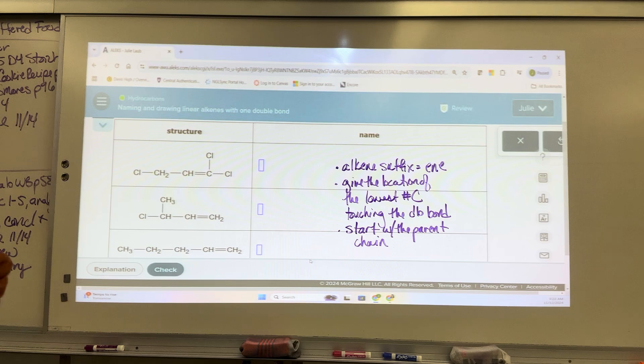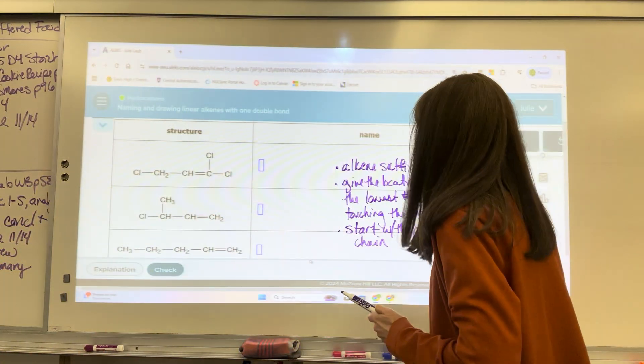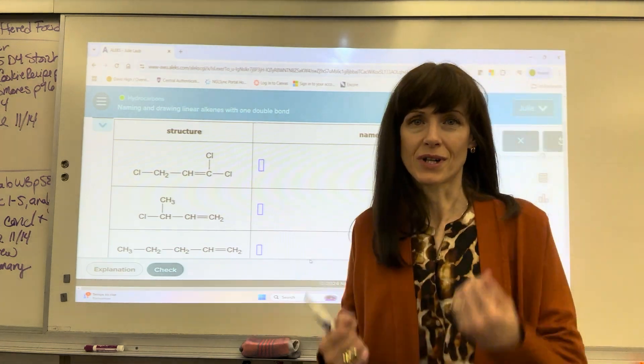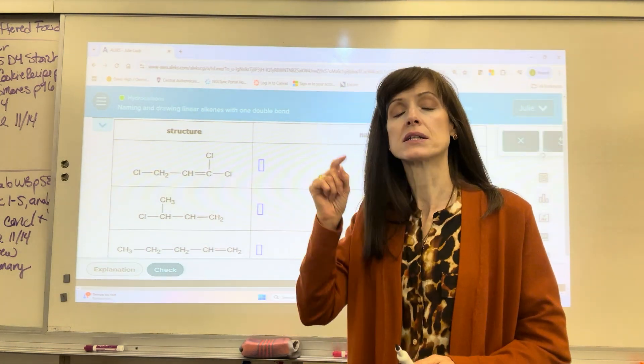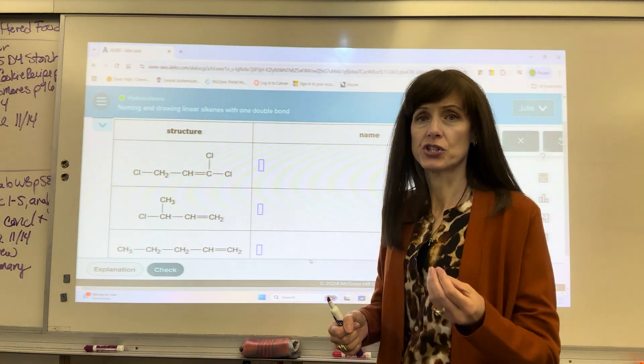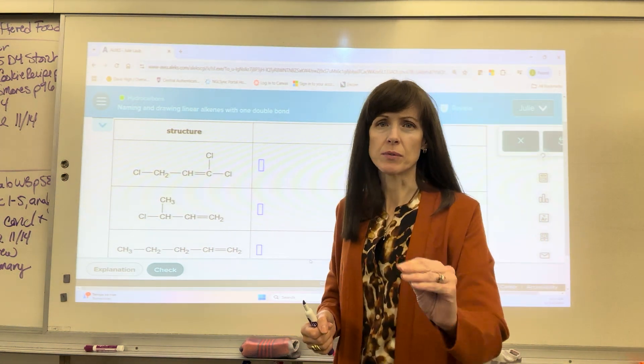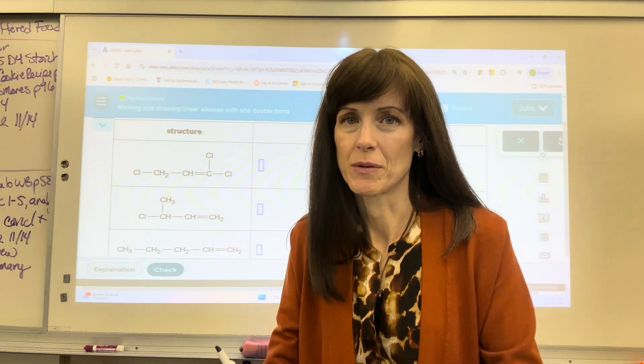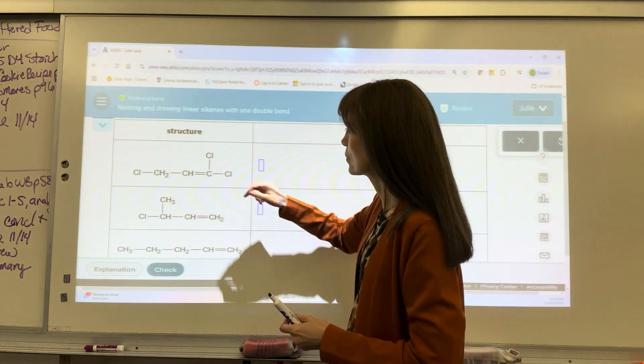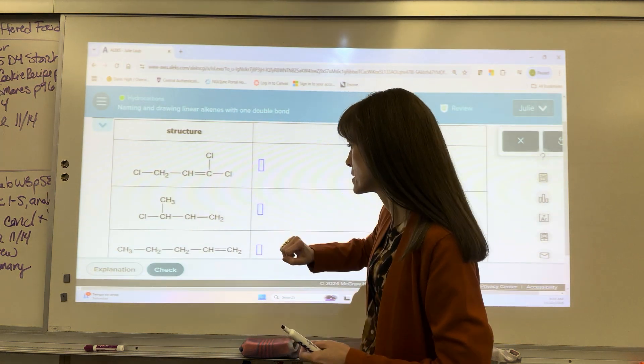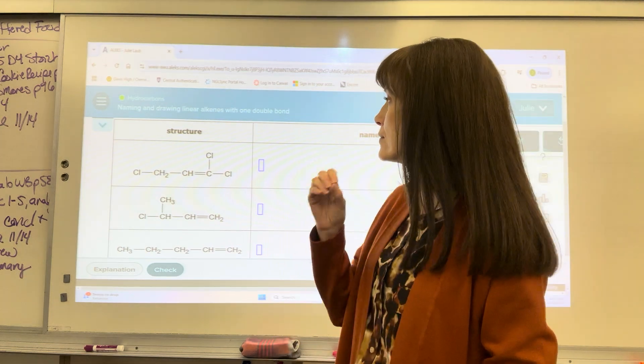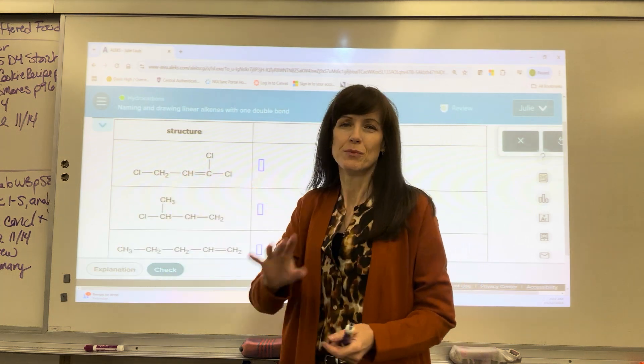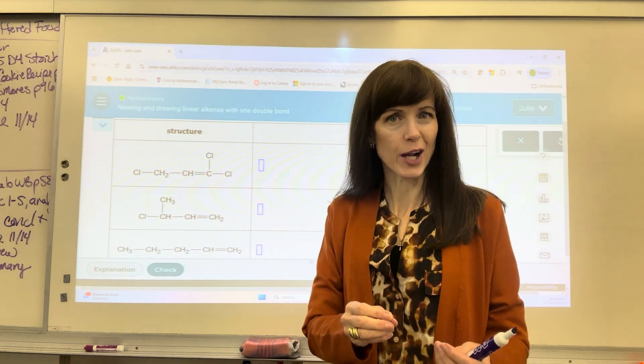Let's do another one for practice. So now they're going to have us name these. Start with that parent chain, the longest continuous chain of carbons. But when you have a double or triple bond, you have to include the longest chain with that double bond. So for example, I couldn't say my longest... you have to include that double bond. Let's look at this first one. Be careful. These chlorines might be a little tricky, might for a second look like carbon. Just be careful.